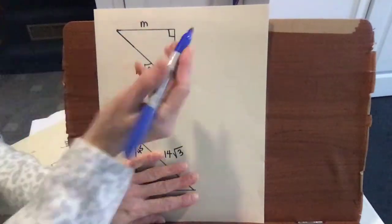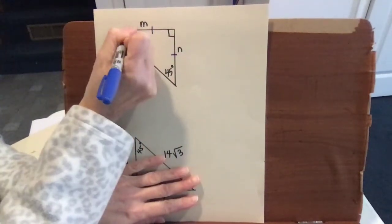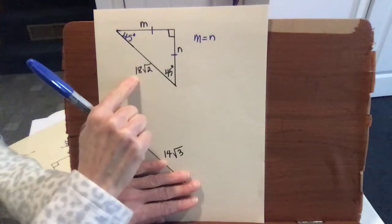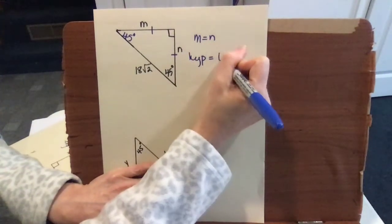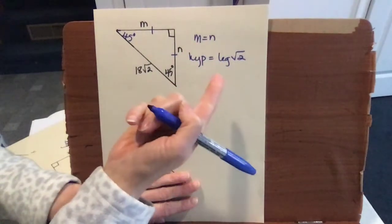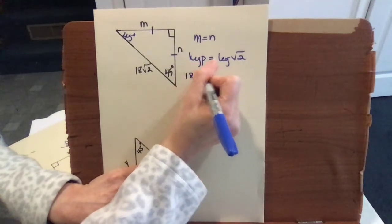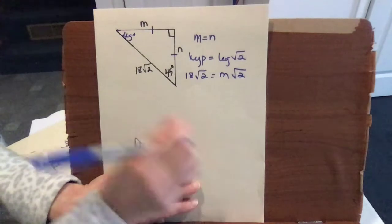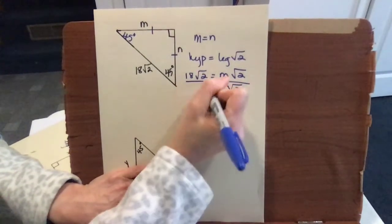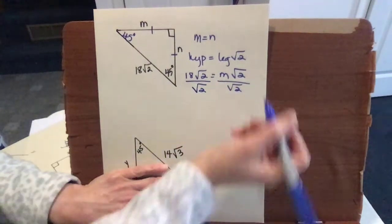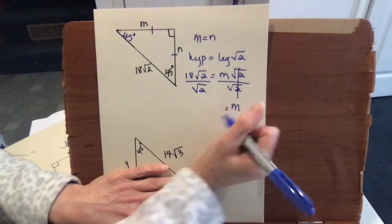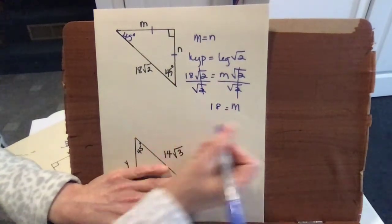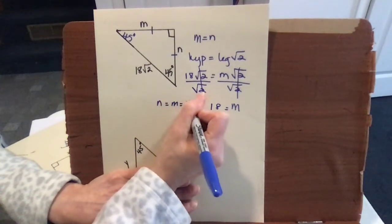We have this triangle with side lengths M and N. Since it's a 45-45-90 right triangle, M equals N, but we're given the hypotenuse. The hypotenuse equals the leg times radical 2, so 18 radical 2 equals M times radical 2. We solve for M by dividing both sides by radical 2 — do not convert to decimal, just use the radical. Anything divided by itself is 1, so radical 2 cancels, giving us M equals 18. Since N equals M, N is also 18.